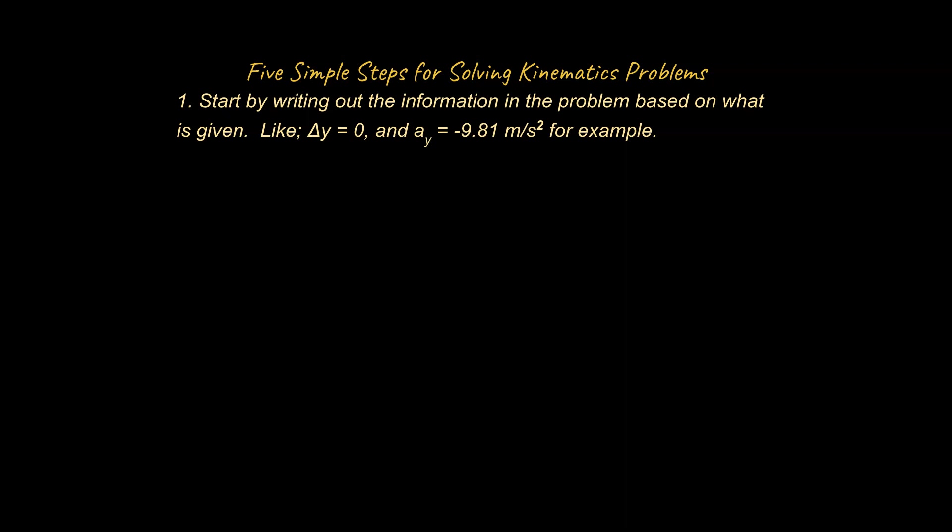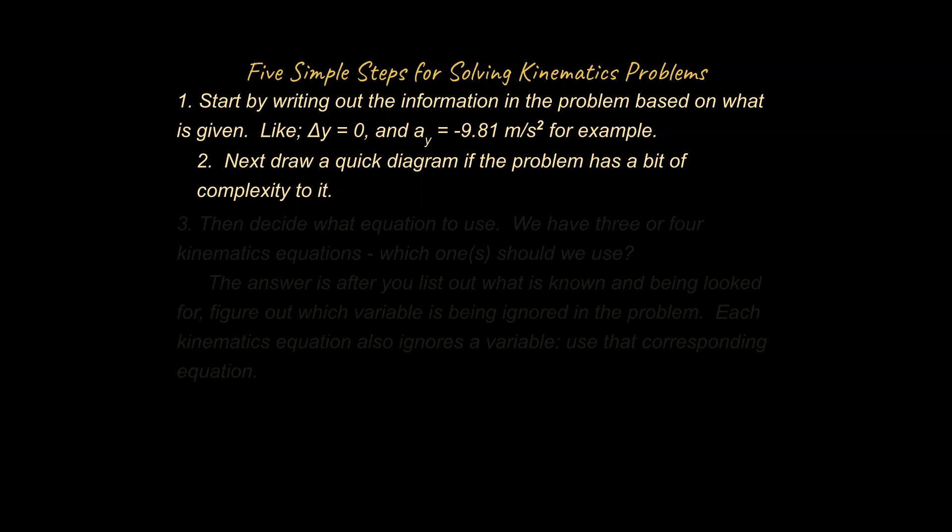So start by writing out the information in the problem based on what is given. So you're reading the problem. Essentially, physics problems are like word problems, and as you read, you stop periodically and write things down, like delta y is equal to zero, acceleration of the y is equal to minus 9.81 meters per second squared. You write this stuff down as you read the problem. All right, next up, draw a quick diagram if the problem has a bit of complexity to it. So a lot of problems you're going to be expected to draw a diagram for. This is a step that a lot of smart students or lazy students, either one, will skip because they think they don't need to do this. But even smart students can make mistakes if they are not careful with setting up problems well.